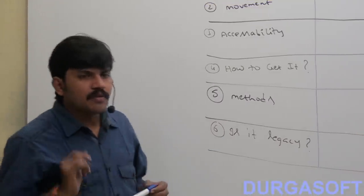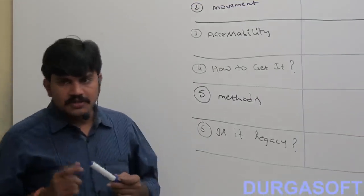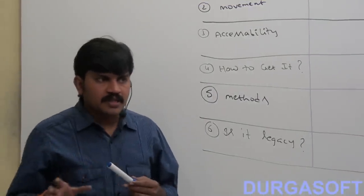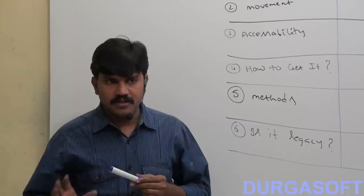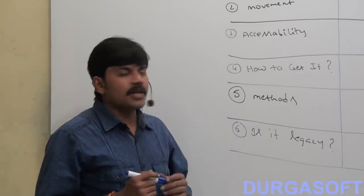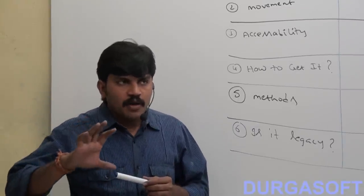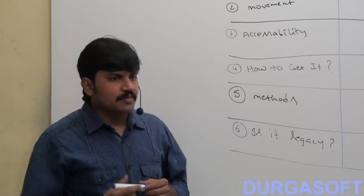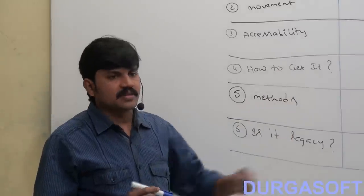Up to this we covered enumeration, iterator, list iterator concept type. But now I will explain a small comparison table about these three cursors.